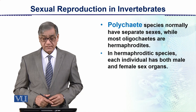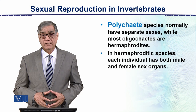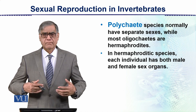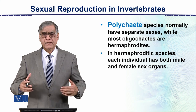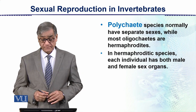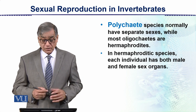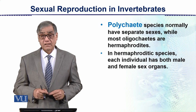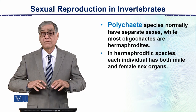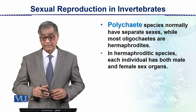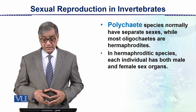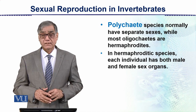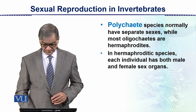In polychaetes, polychaete species normally have separate sexes. Oligochaetes, which include earthworms as an example, can come together and exchange sperms. Most oligochaetes are hermaphrodites. In hermaphroditic species, each individual has both male and female sex organs.